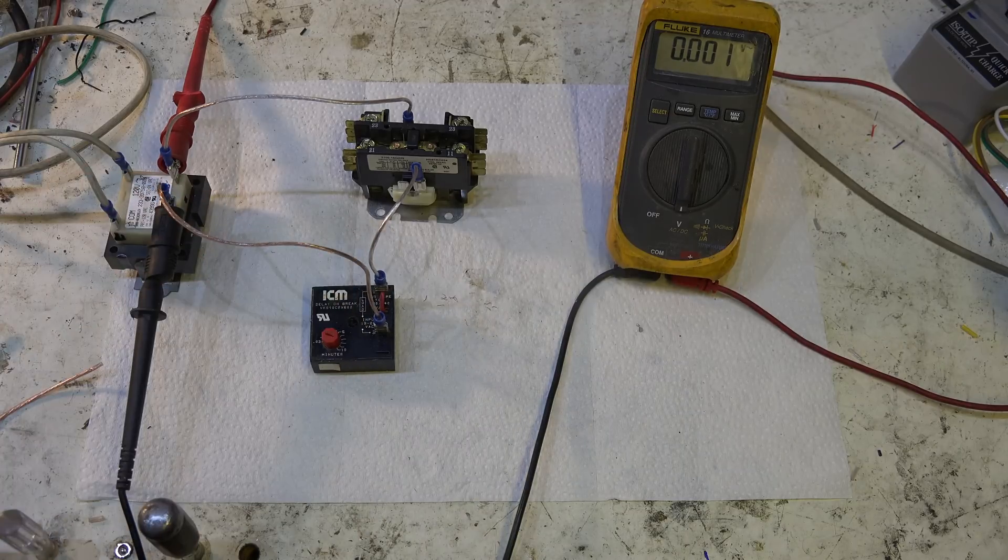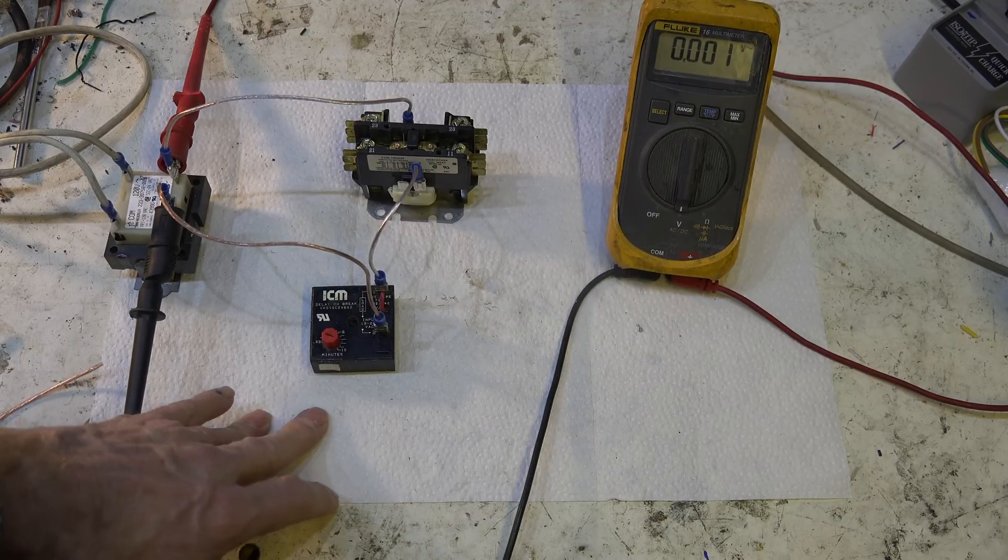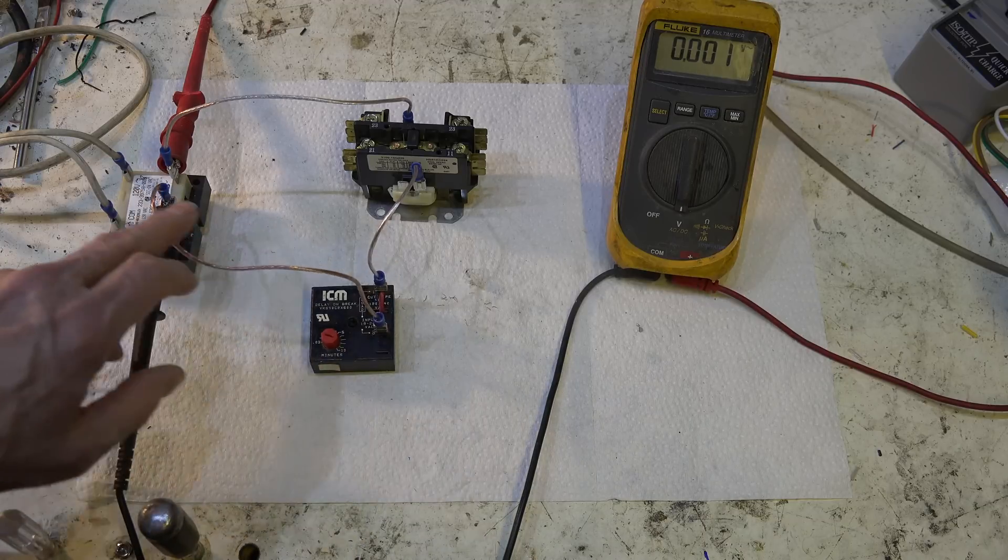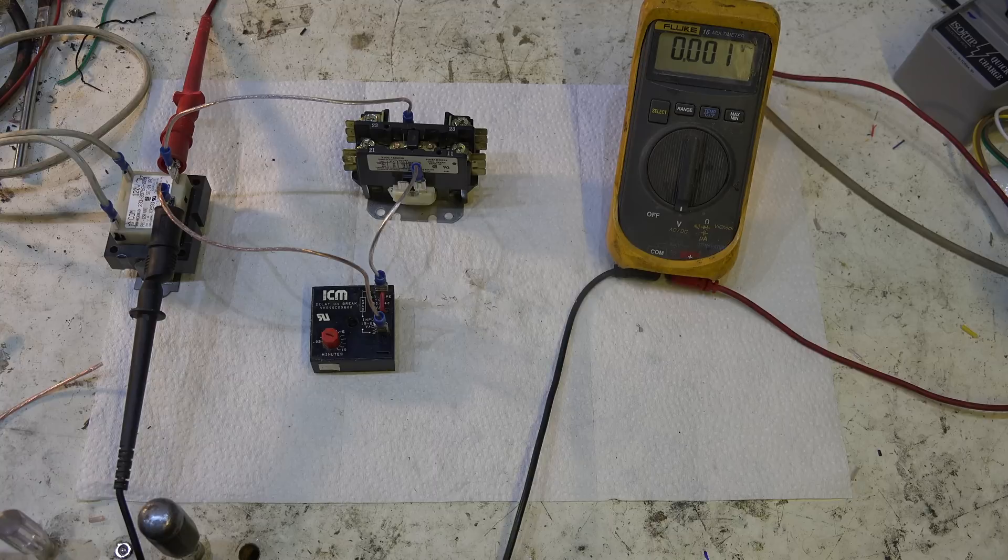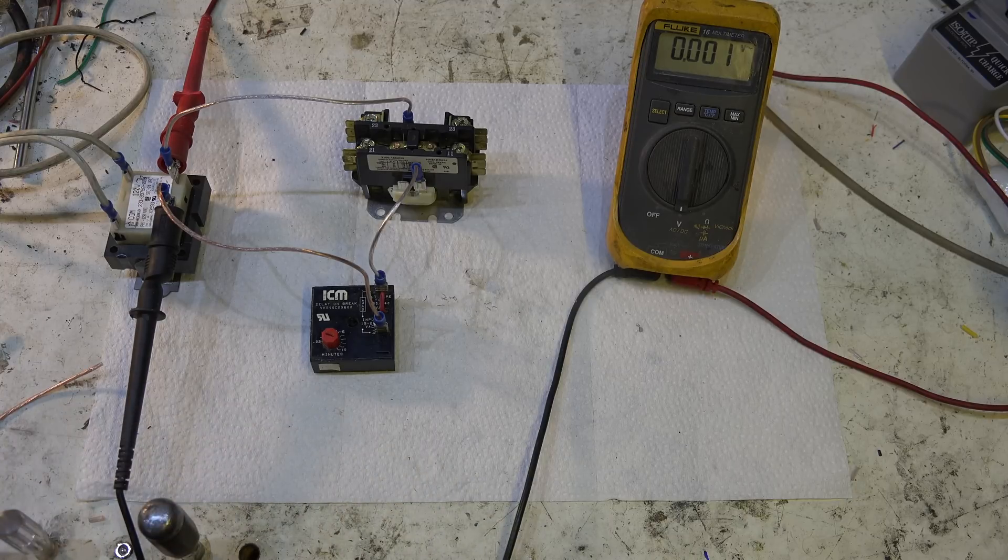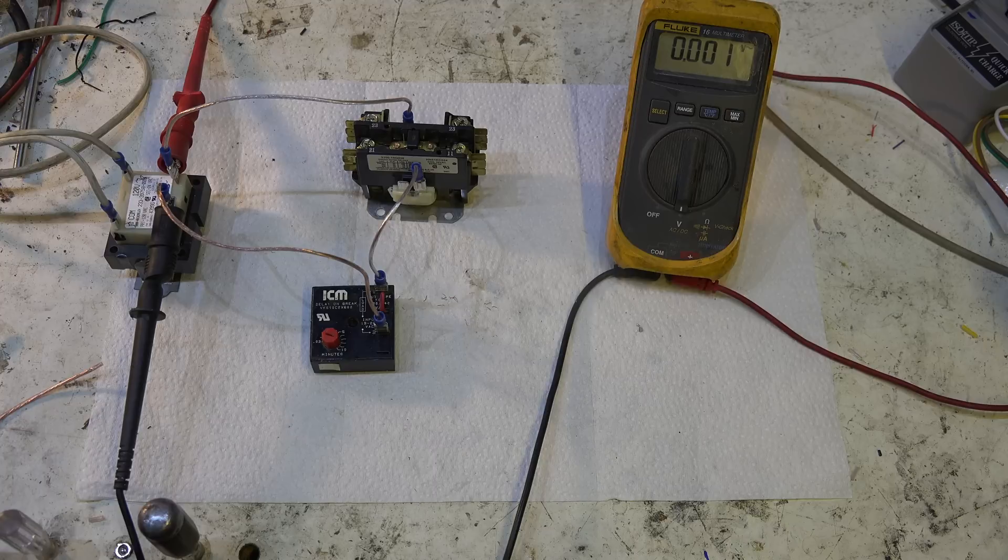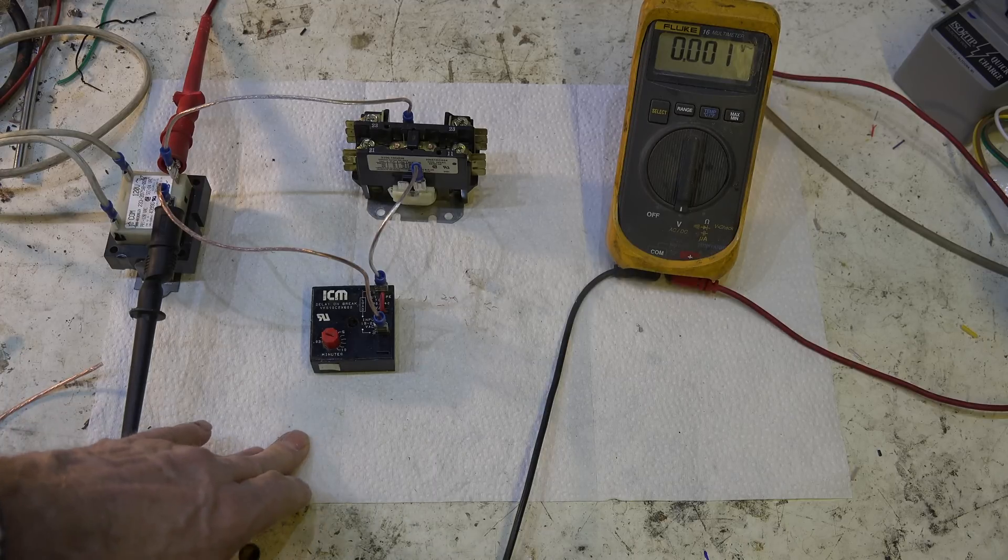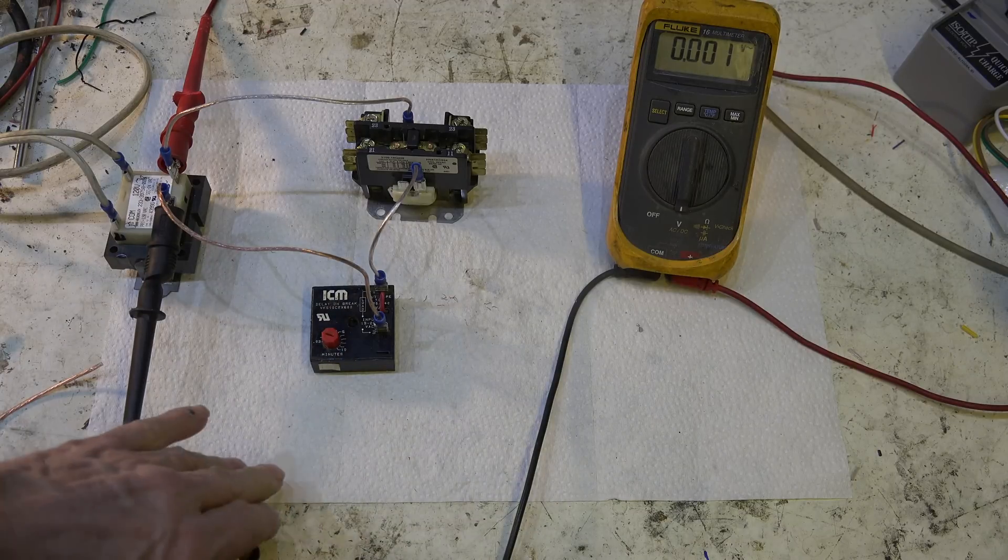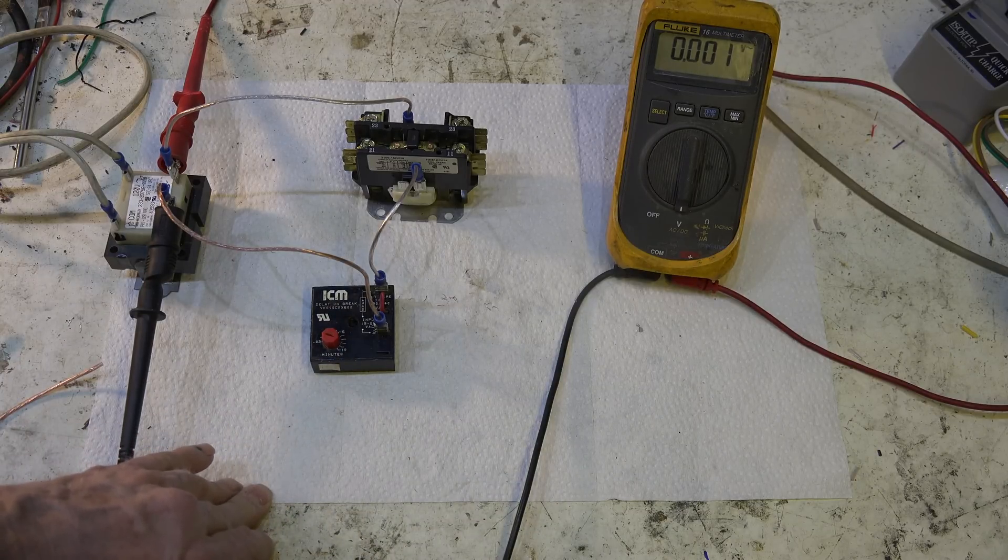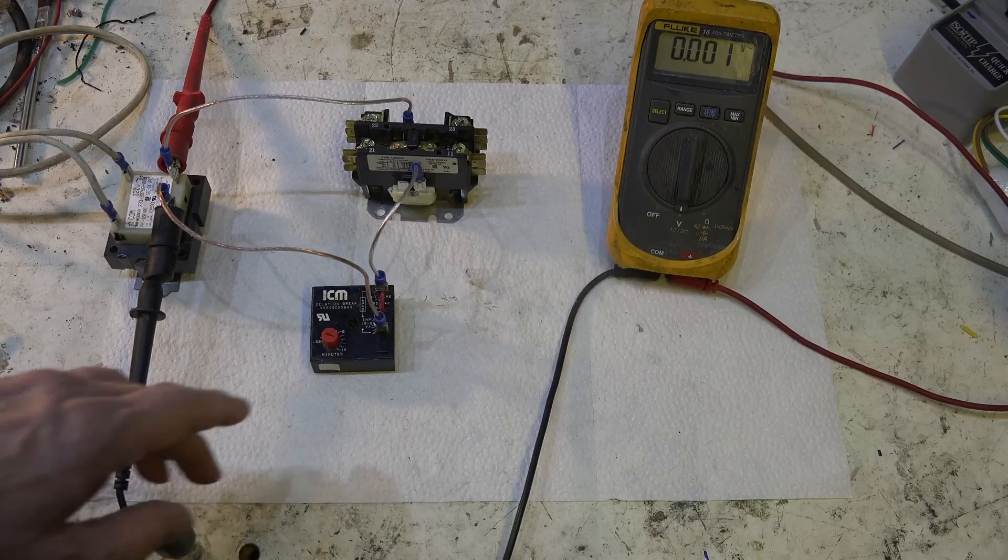If you're wiring it into an outdoor unit, I would simply put, say, the yellow wire. And it could be either side, it could be yellow, it could be the common, whatever you have. But it has to be in that line somewhere, probably best to put it in the Y line.